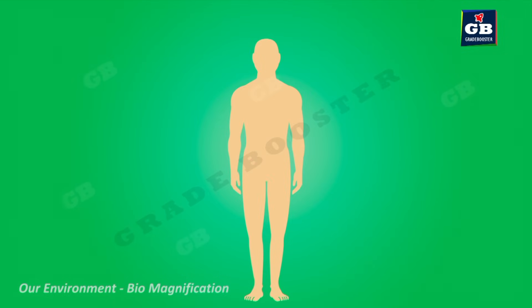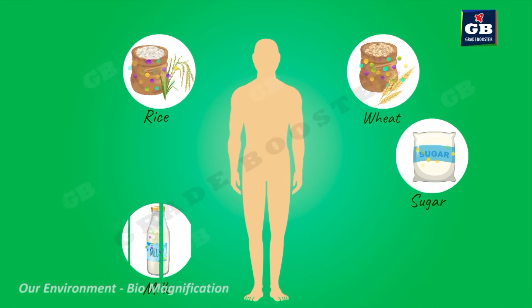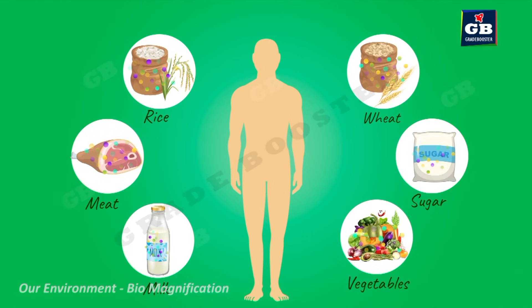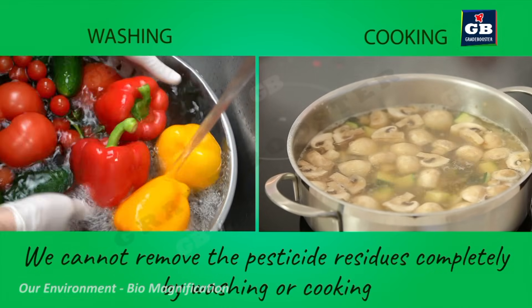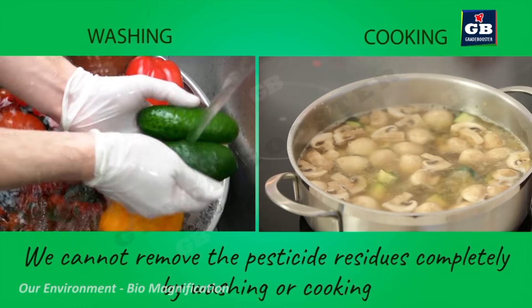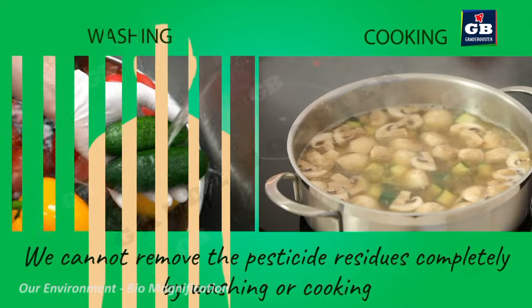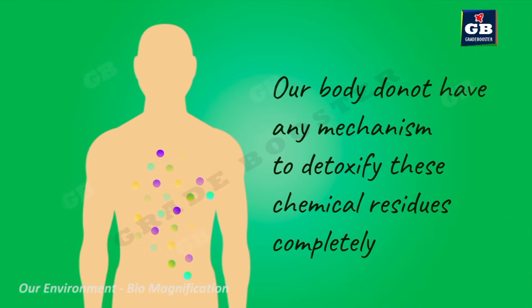Every day we use many food ingredients like rice, wheat, sugar, milk, meat, and vegetables — all sourced from plants or animals. Pesticide residues from these ingredients enter our body even if we wash or cook them properly, as we cannot completely remove pesticides that way. Unfortunately, our body cannot fully detoxify or excrete these chemical residues, so they remain in our body and cause various health problems.